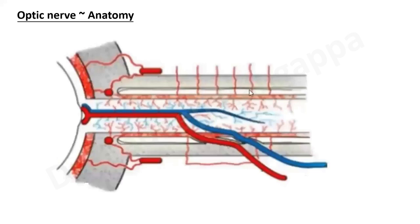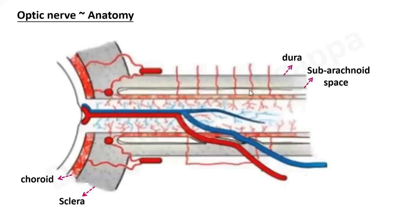To understand optic nerve sheath diameter, we first need to understand the optic nerve anatomy. Looking at the optic nerve, you have the choroid around it and then the sclera. The key thing to remember is that the optic nerve is in close proximity with the dura and the subarachnoid space.